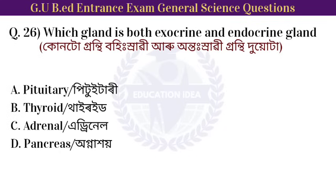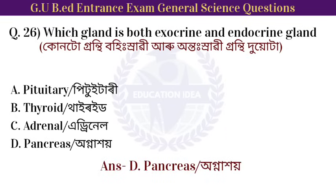Next question: which gland is both exocrine and endocrine? Option: pancreas. The pancreas is both an exocrine and endocrine gland.